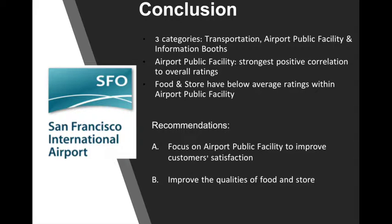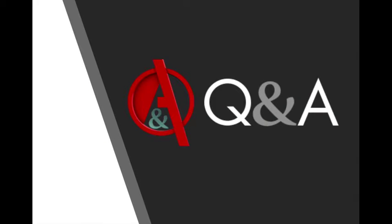In conclusion, there are three categories that San Francisco International Airport is focused on: transportation, airport public facility, and information booths. Airport public facility, as Factor 2, has the strongest positive correlation to overall ratings, and food and store within that group have below-average ratings. Therefore, our recommendations are: first, focus on airport public facility to improve overall customer satisfaction; second, improve the quality of food and store. For food, SFO can carry more cuisine options, open more restaurants with various choices, and expand dining hours such as 24-hour dining. For store, SFO can carry more luxury brands to expand shopping options, generate more premium passengers, and increase more duty-free shops to increase overall customer satisfaction.